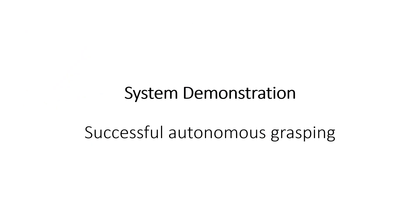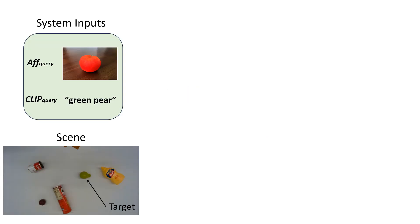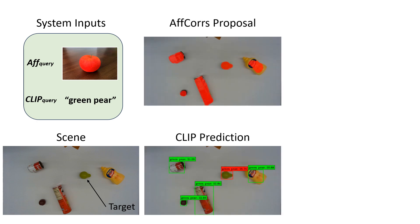Now, we demonstrate an autonomous grasp. We have the green pear as the target object in the scene and input an image of the apple. The affordance matching outputs possible regions and CLIP is used to identify which region is the target.